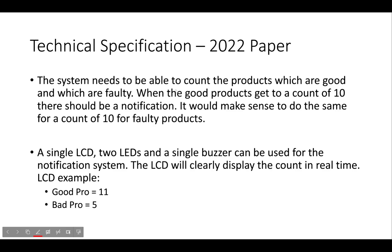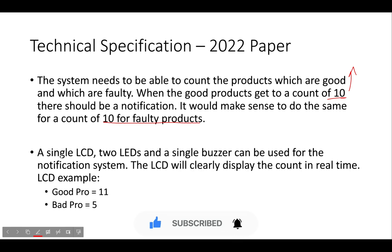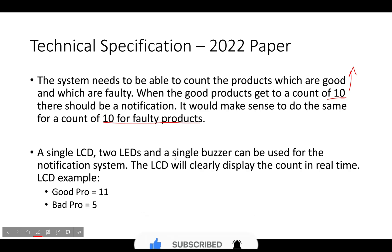The system also needs to count products that are good and faulty. When the good products reach a count of 10 there should be a notification. It would make sense to do the same for a count of 10 faulty products — it's relatively easy since we're just doing the same logic twice. So when it gets to a count of 10 for the good ones something happens, and when it gets to a count of 10 for the faulty ones something else happens.